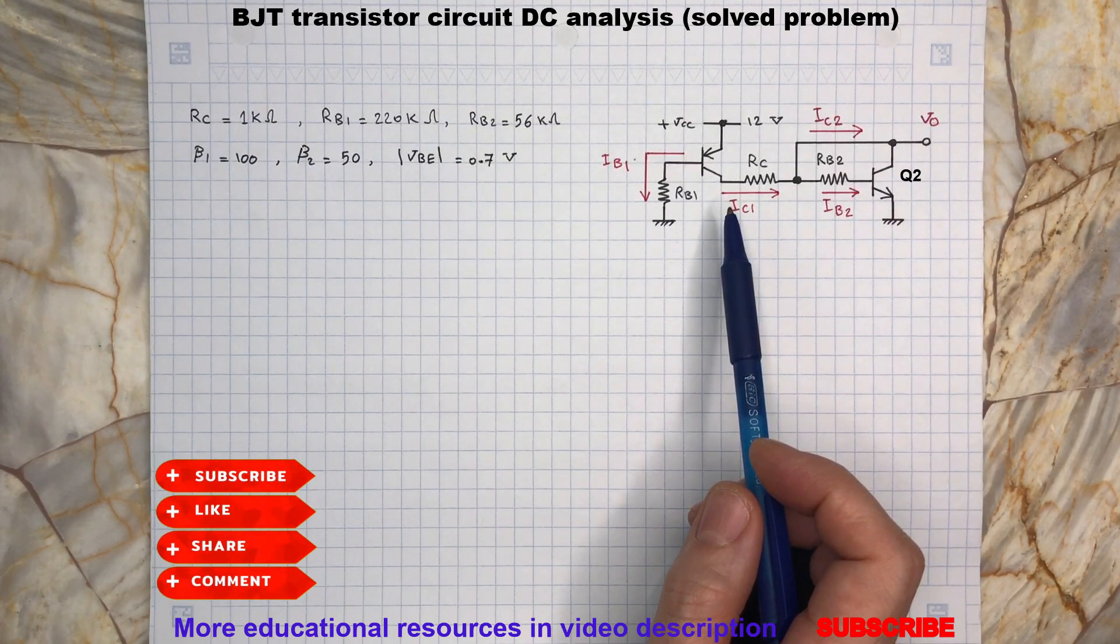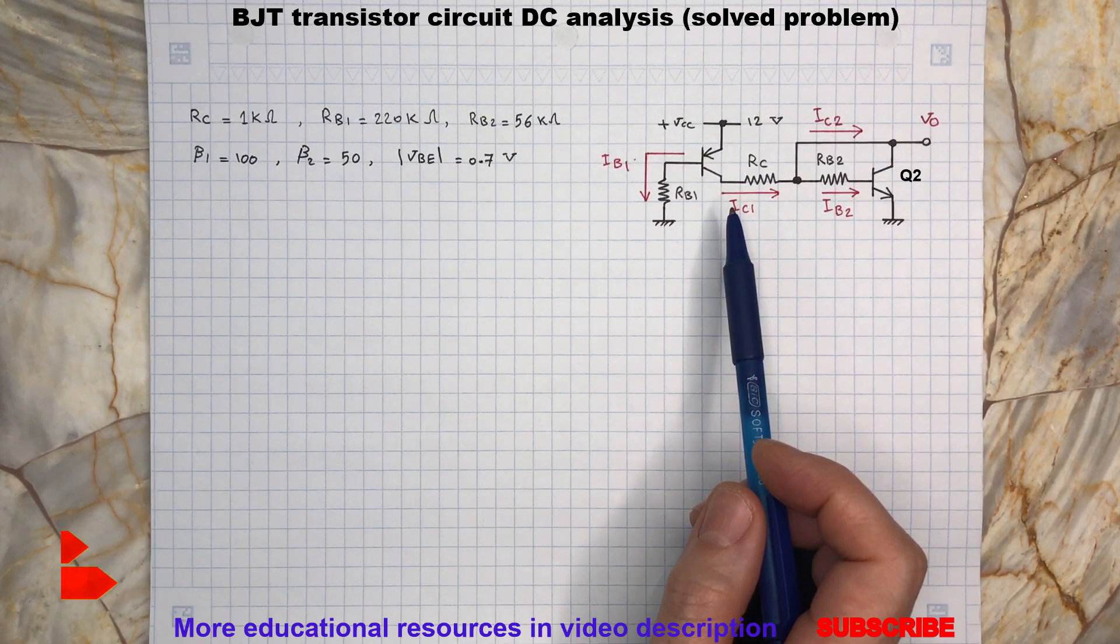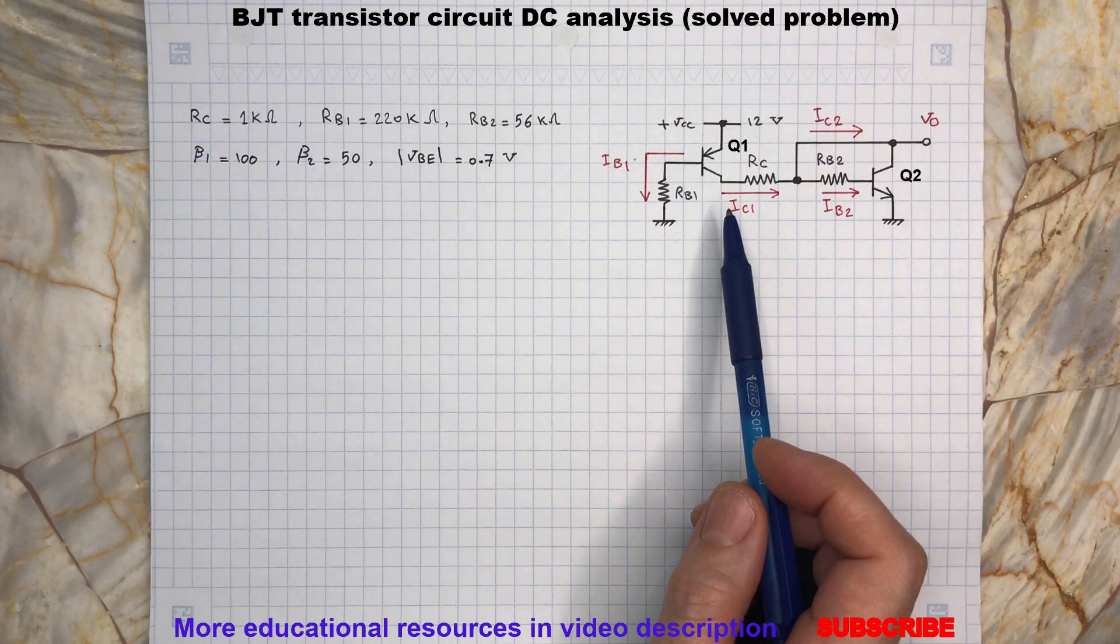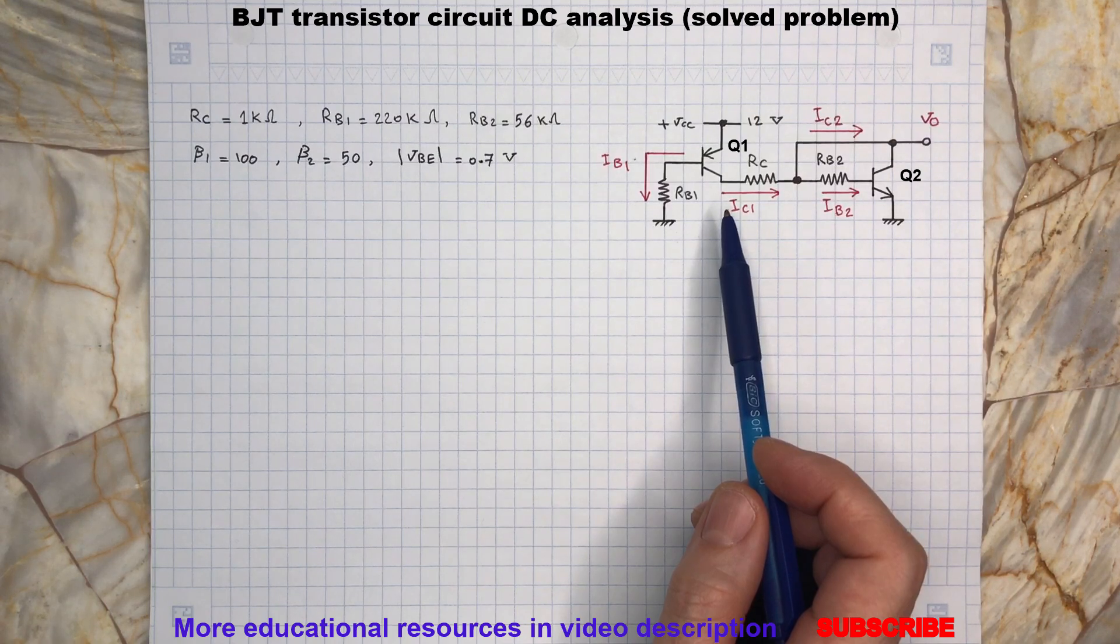The main point of analyzing this circuit is to understand the fact that the current flowing through the collector of Q1 is independent from resistor RC and biasing of the transistor Q2.